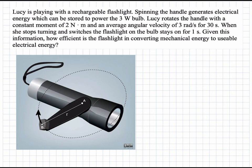In this problem, there's a flashlight with a handle that can be spun around to generate electricity and power a light bulb. Lucy is spinning this handle for 30 seconds at an angular velocity of 3 radians per second with a constant moment of 2 newton meters. And this is used to power a light bulb that uses 3 watts of power, and we're keeping it on for one second.